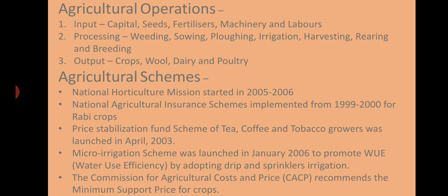Agriculture operations involve three steps. First, inputs: what is required — capital, seeds, fertilizers, machinery and labor. Second, processing: weeding, removal of waste, plowing, irrigation, harvesting, and rearing and breeding of cattle. Third, the output: crops, wool, dairy products, and poultry.